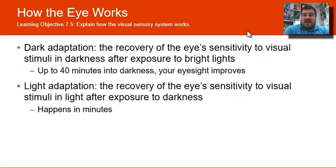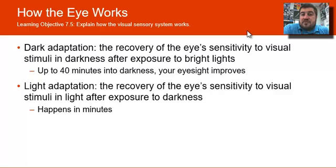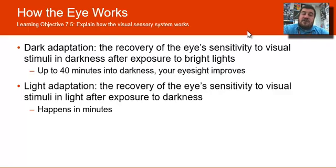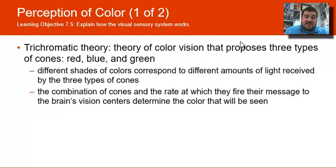Dark adaptation is your eye's sensitivity to darkness. If you go into a dark room, your pupil gets bigger as your iris opens up, and up to 40 minutes into darkness your eyesight can improve. Light adaptation, on the other hand, happens in just a few minutes — like when you turn on the lights in the morning and it seems extremely bright. Dark adaptation takes much longer than light adaptation.